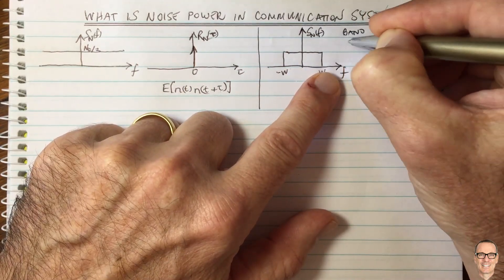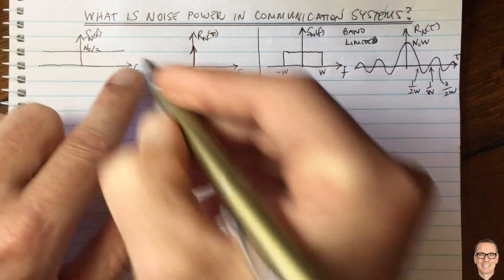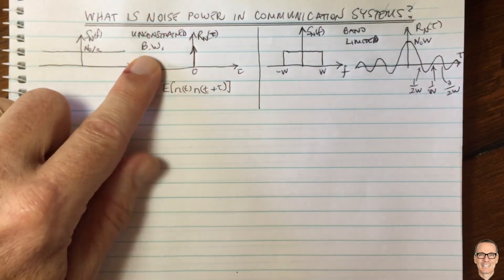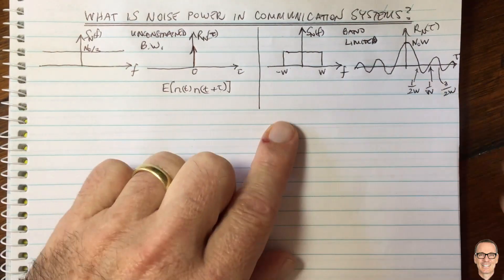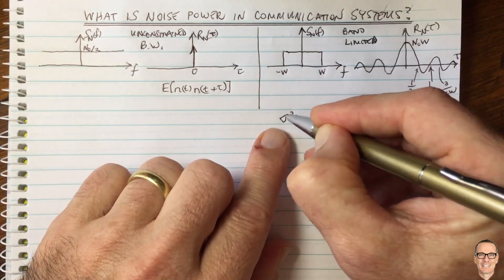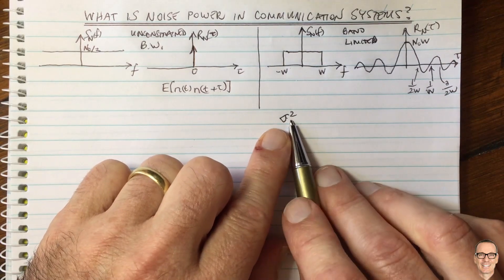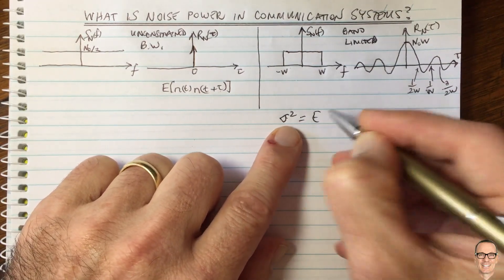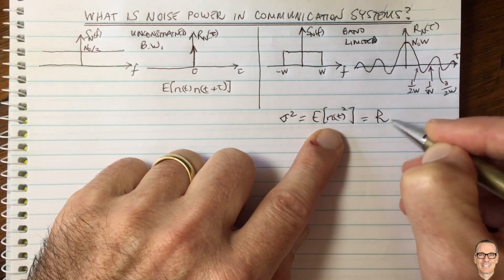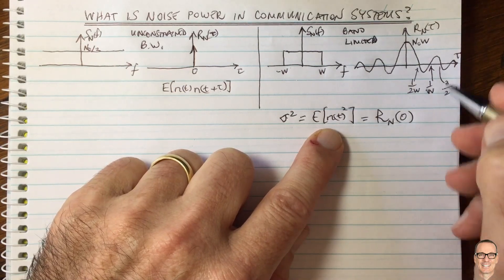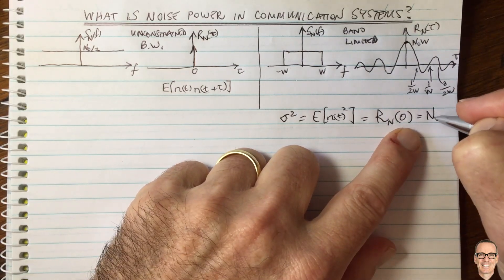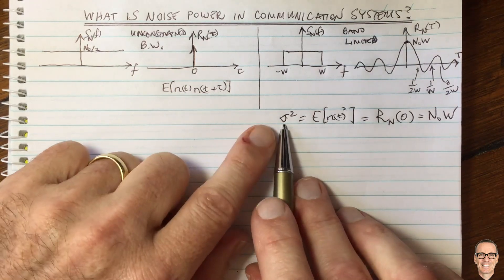This is the band-limited case on the right-hand side, while the left-hand side was the unconstrained bandwidth case. Now, what about the noise power? The noise power σ² equals the expected value of noise squared, which is the definition of noise power. This also equals the autocorrelation function evaluated at τ = 0. In the band-limited case this is well-defined as N₀ times W — that is the noise power.